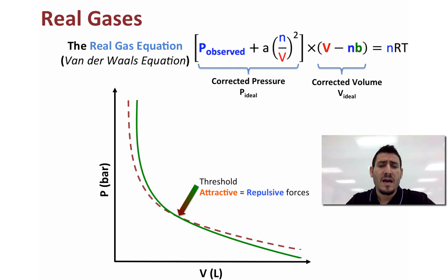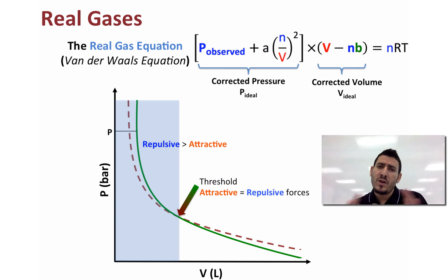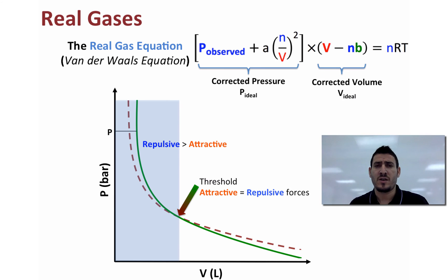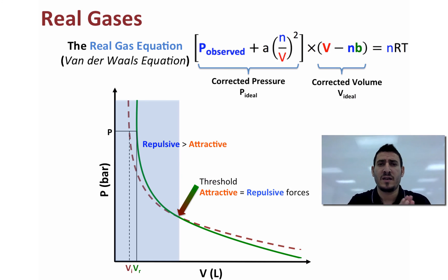At low volume and high pressure the repulsive force is greater than the attractive force because the particles are forced close together. Taking the same pressure for both gases: particles are repelling each other in the real gas but in the ideal gas they don't interact. So if particles are repelling each other, the real gas volume appears higher than the ideal gas volume. Therefore the real volume is greater than the ideal volume, meaning the green curve belongs to the real gas and the dotted brown curve belongs to the ideal gas.